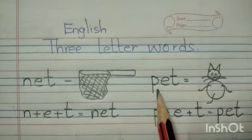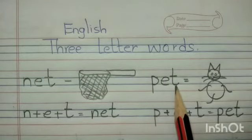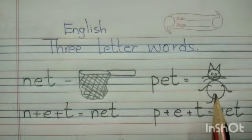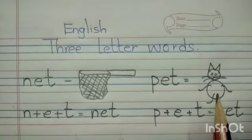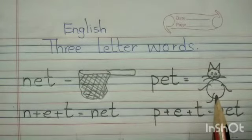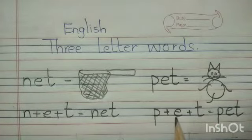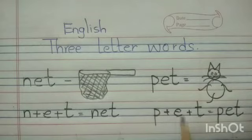The next word is Pet. P-E-T, Pet. Pet means the animals which we keep in our home — like cat, dog, rabbit, birds like parrot, etc. So this word also has 3 letters: first letter, second letter, and third letter. P plus E plus T, Pet.